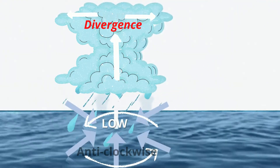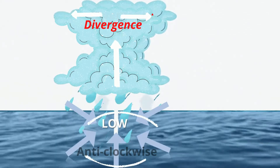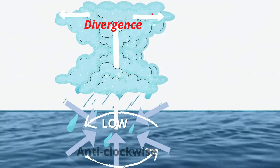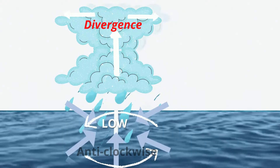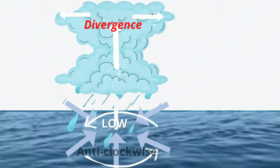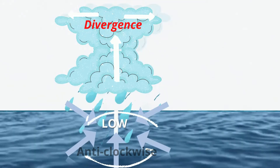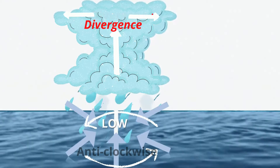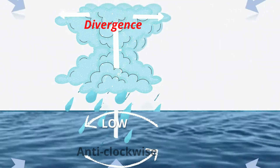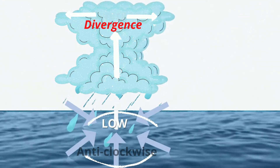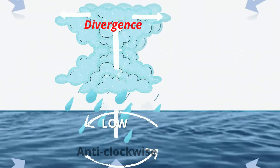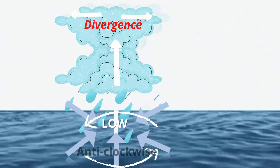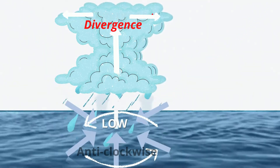Since winds blow from areas of high pressure to areas of low pressure, air from the surrounding environment will be drawn into the low pressure center. As the winds blow inwards, they are deflected to the right of their path by the Coriolis force, resulting in an anti-clockwise movement of the air.